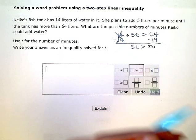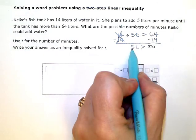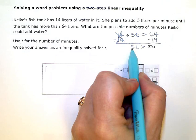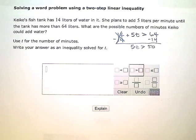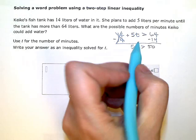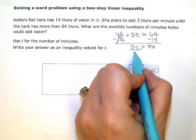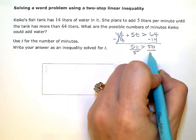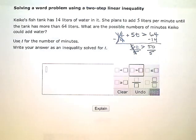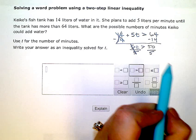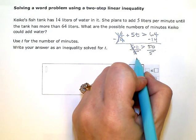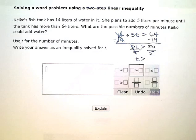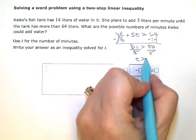So here's my second step now to get rid of the coefficient 5 here. This is implied multiplication right there, and the inverse or the opposite would be to divide. So we're going to divide by 5 so that that coefficient will cancel out, but to keep things balanced, we have to do the same thing on this side.